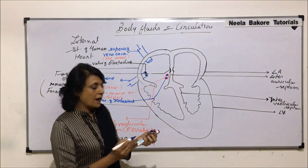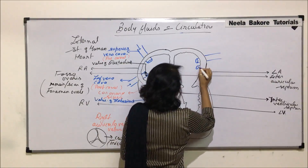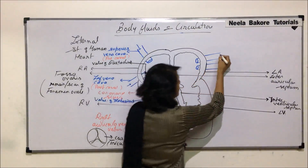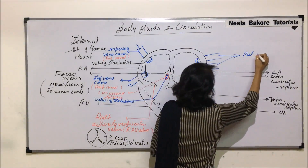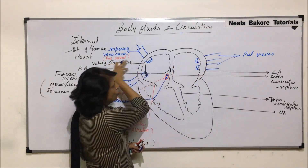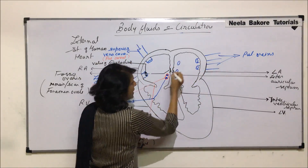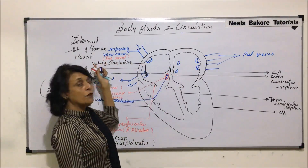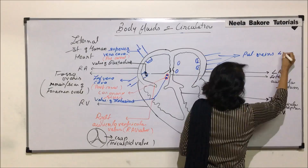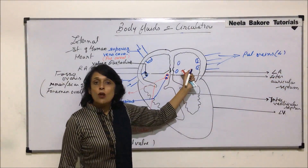This oxygenated blood comes here through pulmonary veins. There are 4 pulmonary veins which bring oxygenated blood, 2 coming from each lung. So these are the openings of 2 pulmonary veins coming from the right lung and 2 coming from the left lung. In all, 4 pulmonary veins are there, and their openings do not have valves.